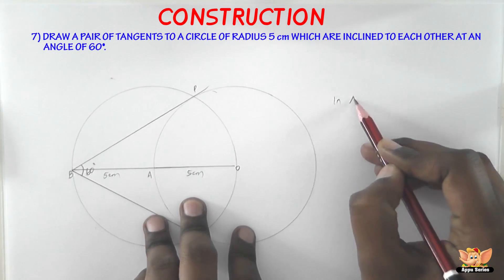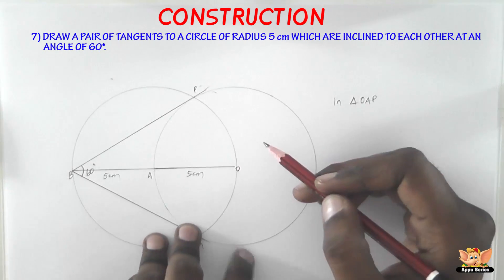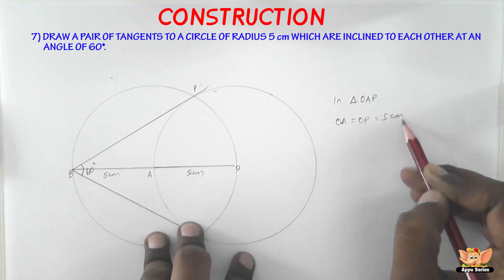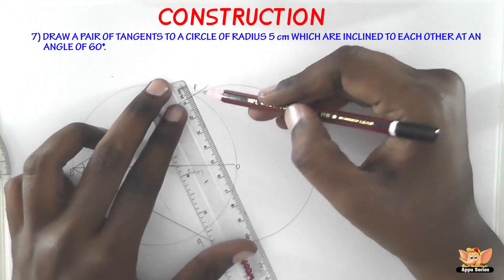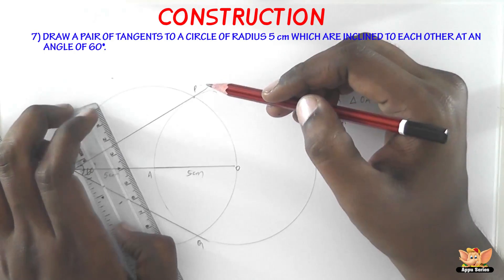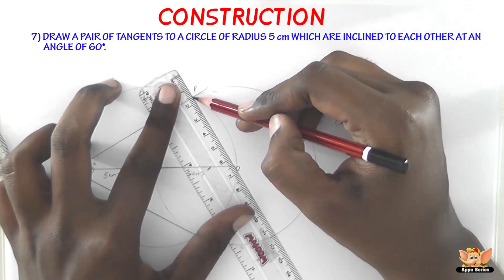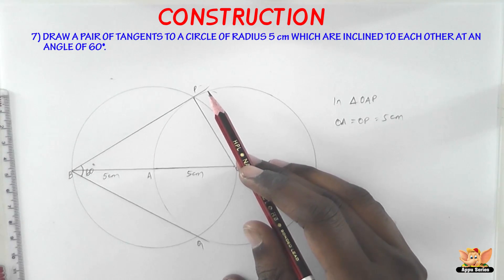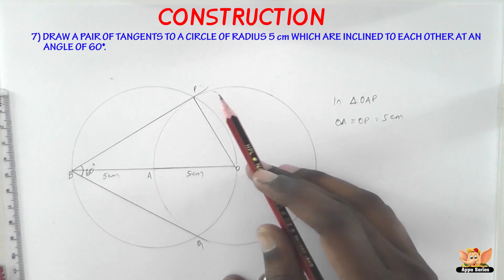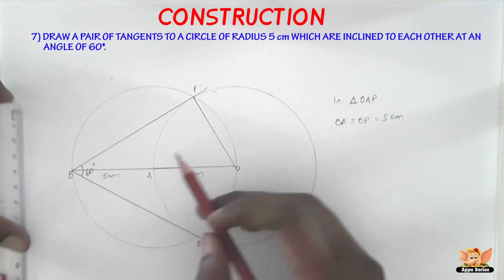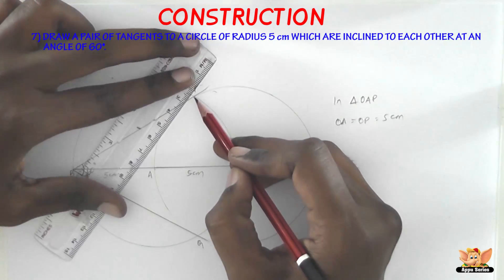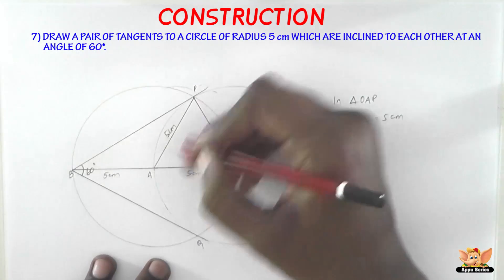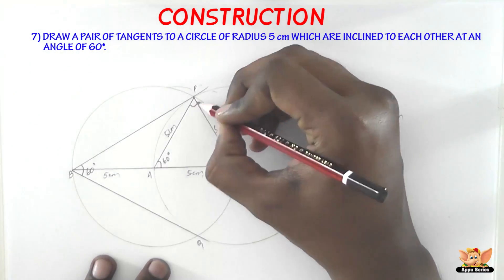Now in triangle OAP, we have OA equal to OP which is equal to 5 centimeters. Let's draw OP here. So this is going to be 5 centimeters because it is the radius of the circle. Now AP equals 5 centimeters. That's because this is the radius of the circle with center A. We are not talking about this circle here. We are talking about this circle now. So if we draw AP, this is also going to be 5 centimeters because this is the radius of this circle. Therefore, this becomes an equilateral triangle. And we know that the angles in an equilateral triangle are 60 degrees, 60 degrees and 60.